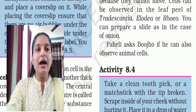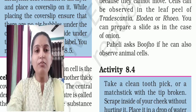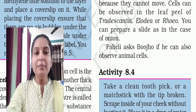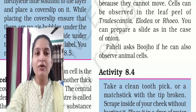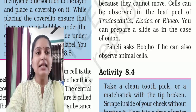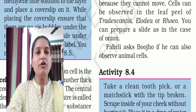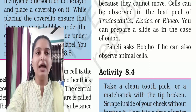Plants are exposed to these environmental variations because they cannot move. Since plants can't move, they have adapted by having a cell wall for extra protection. You can also observe cells in the leaves of Tradescantia, Elodea, and Rhoeo.